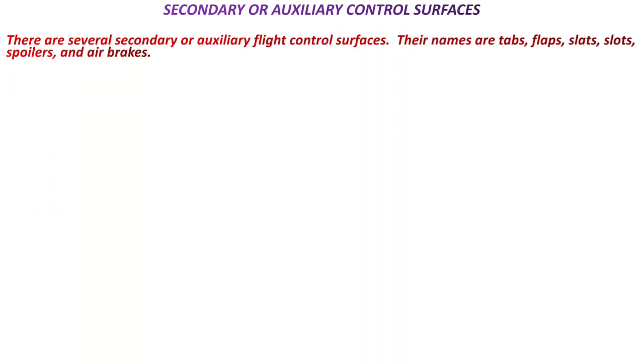Hello friends, in this video I will tell about secondary or auxiliary control surfaces. There are several secondary or auxiliary flight control surfaces. Their names are tabs, flaps, slats, slots, spoilers, and air brake.